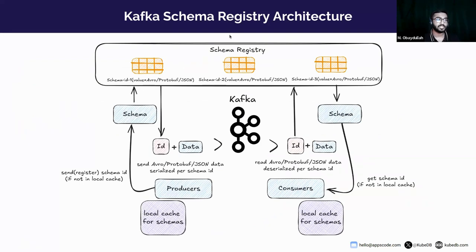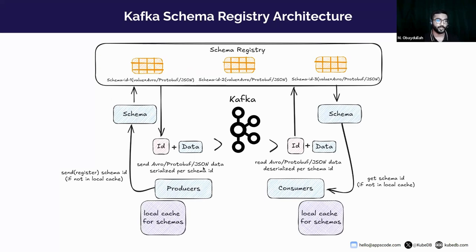If the schema is not available in the local cache, it will search in the schema registry. If the schema registry has this schema, it will return the schema. Otherwise, if the schema is not available in the schema registry, the producer will register the schema via the schema registry API and the schema is returned. After that, the producer will serialize the message with the schema — using Avro, Protobuf, or JSON serialization.